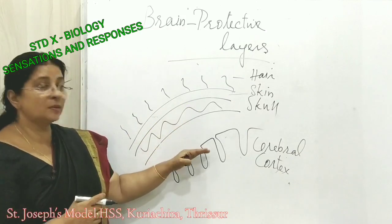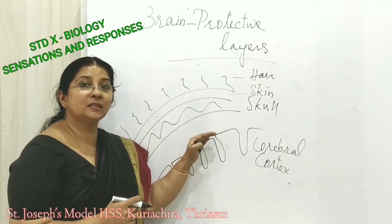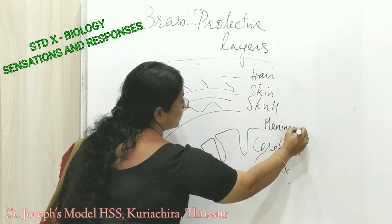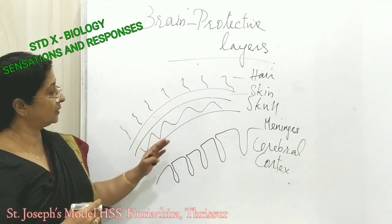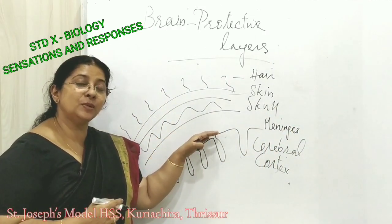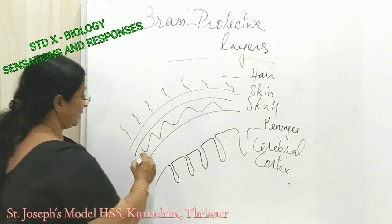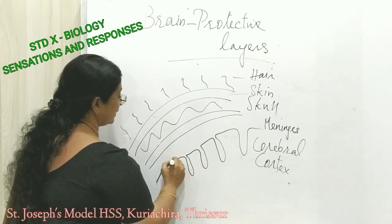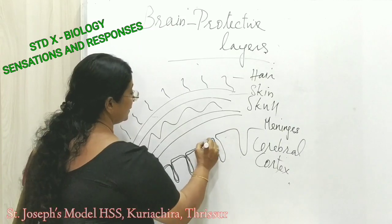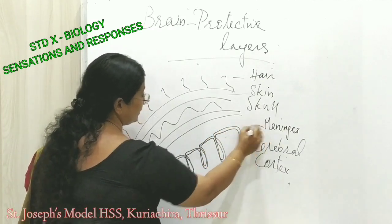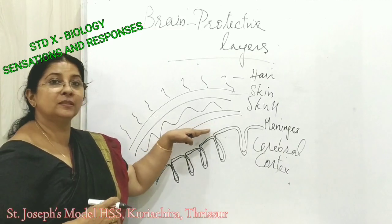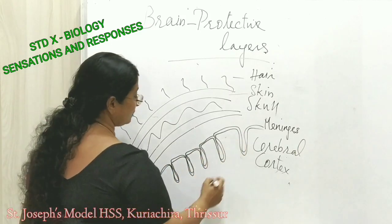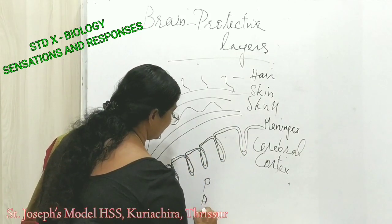Between the skull and the cerebral cortex there is another layer called the meninges. The meninges is actually a three-layered membrane — otherwise called the meninges PAD. There is a first layer above the cerebral cortex, a third outer layer, and a middle layer in between the first and third.